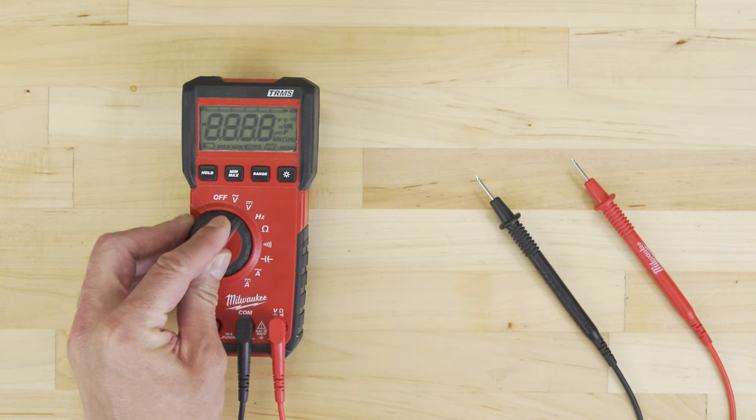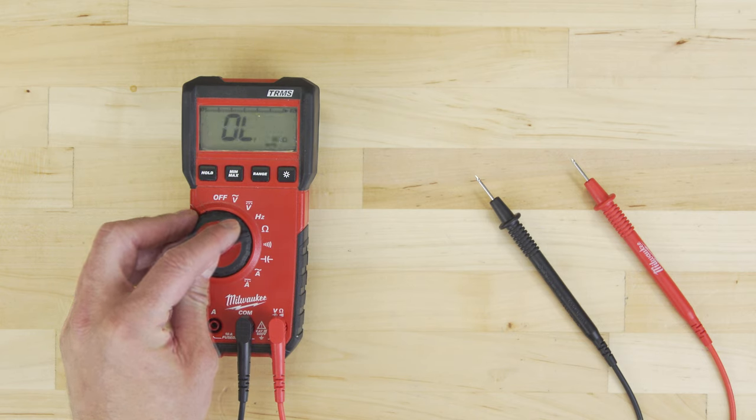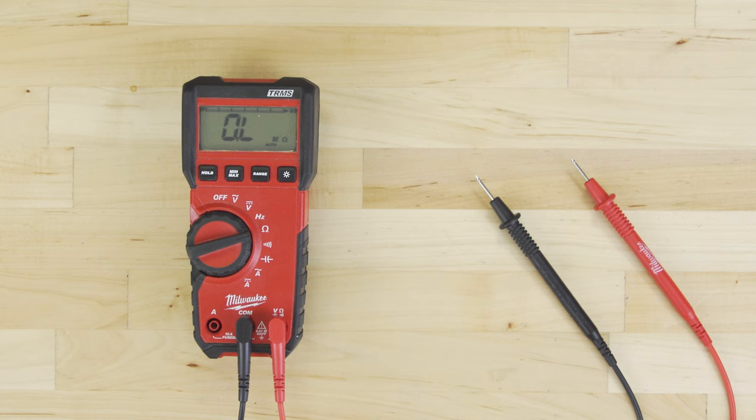To test a component for continuity, first set the multimeter to the ohms or resistance with tone setting.